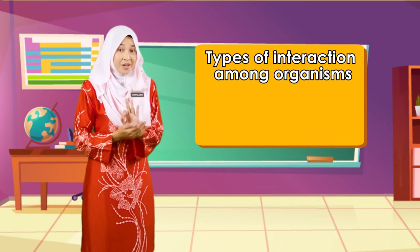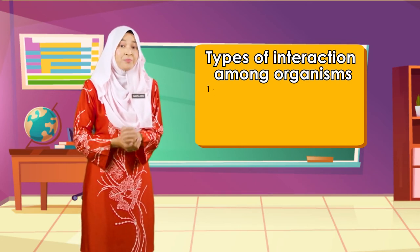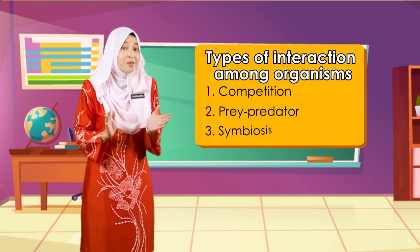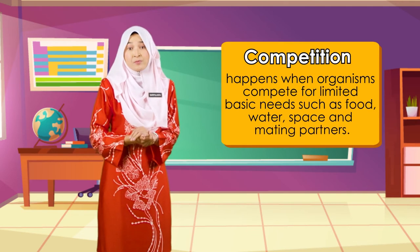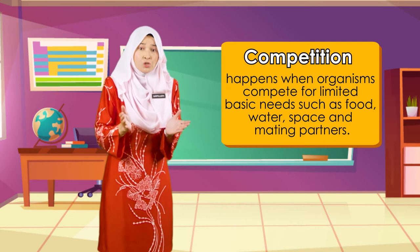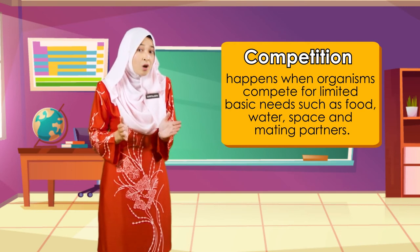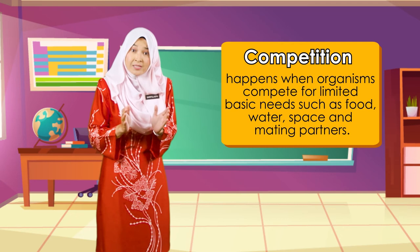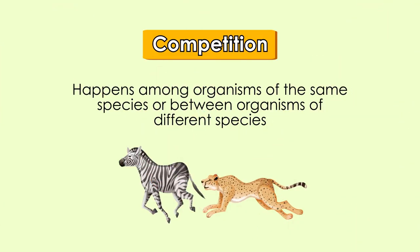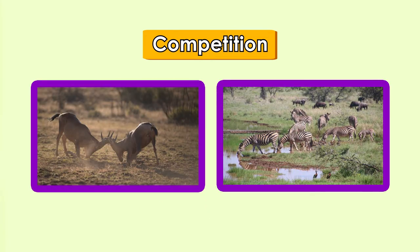There are three main types of interactions between organisms: competition, prey-predator, and symbiosis. Organisms living in the same habitat may face a limited supply of basic necessities. In such a situation, organisms compete for limited food, space, nutrients, and mating partners. This interaction caused by a limited supply of necessities is called competition. Competition may happen among organisms of the same species or between organisms of different species.